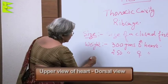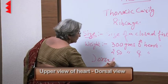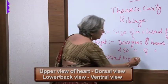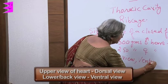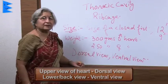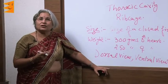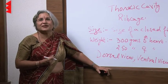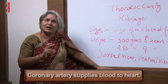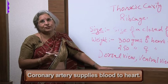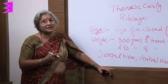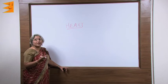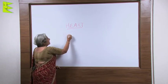We can view the heart both from the upper side, which is called the dorsal view, and also from the back side or lower side, which is the ventral view. Just like any other organ, the heart also requires blood supply because it needs oxygen and energy released by cellular respiration. There is a special artery — the coronary artery — which supplies blood to the heart. The heart is a hollow muscular organ.